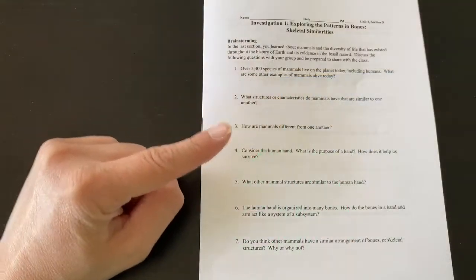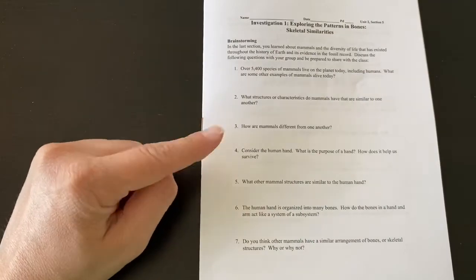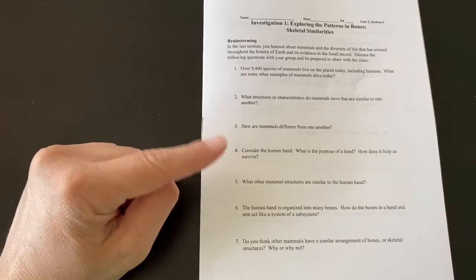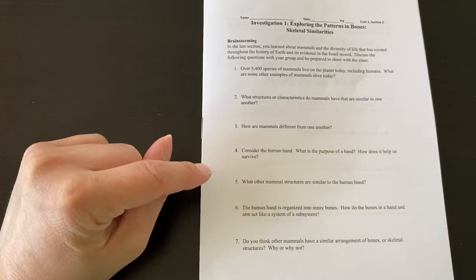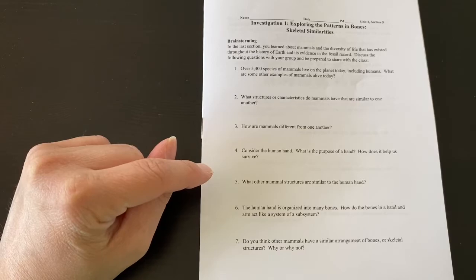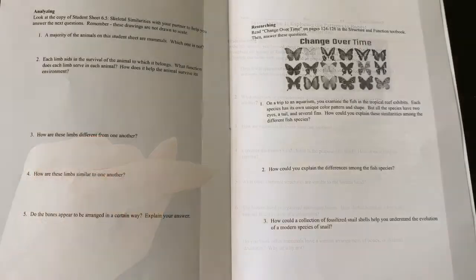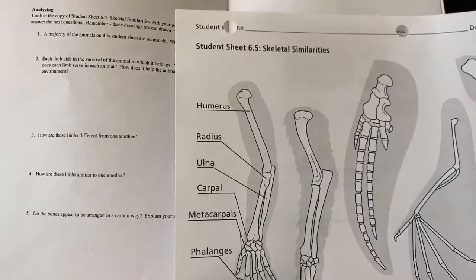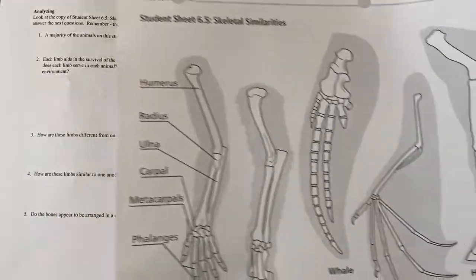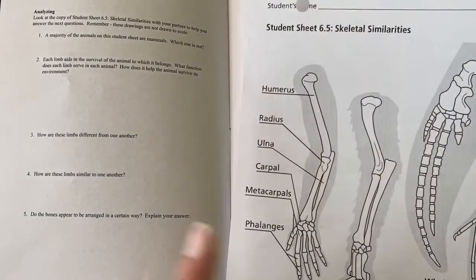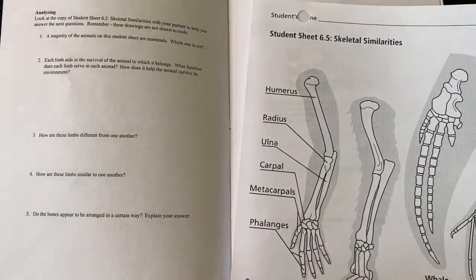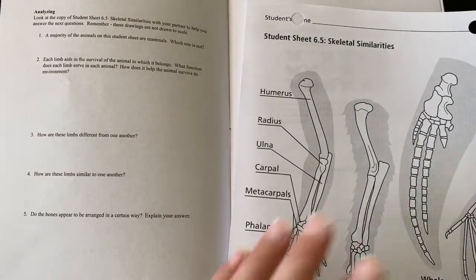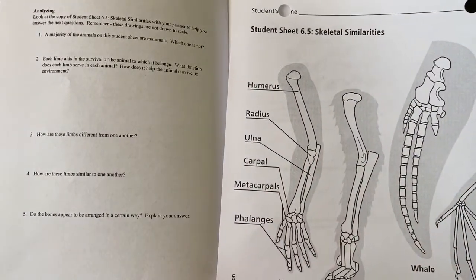To begin, let's start with brainstorming to activate your prior knowledge. You may have these brainstorming questions and all of these questions on paper or electronically on CAMI. The analyzing section has you look at student sheet 6.5 to help answer the questions. They're just asking questions about what you see.